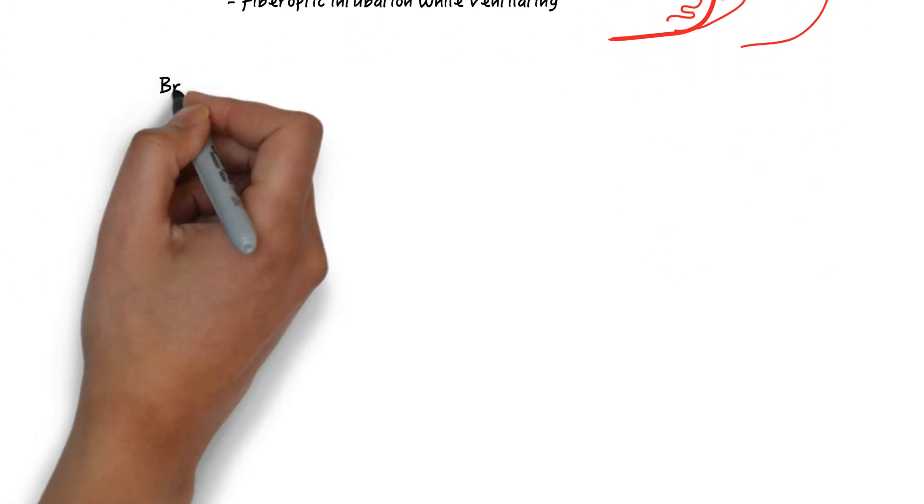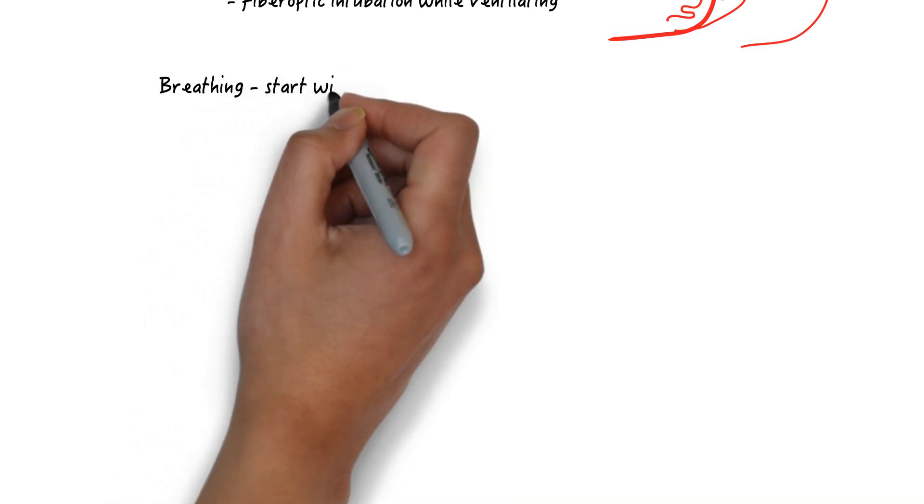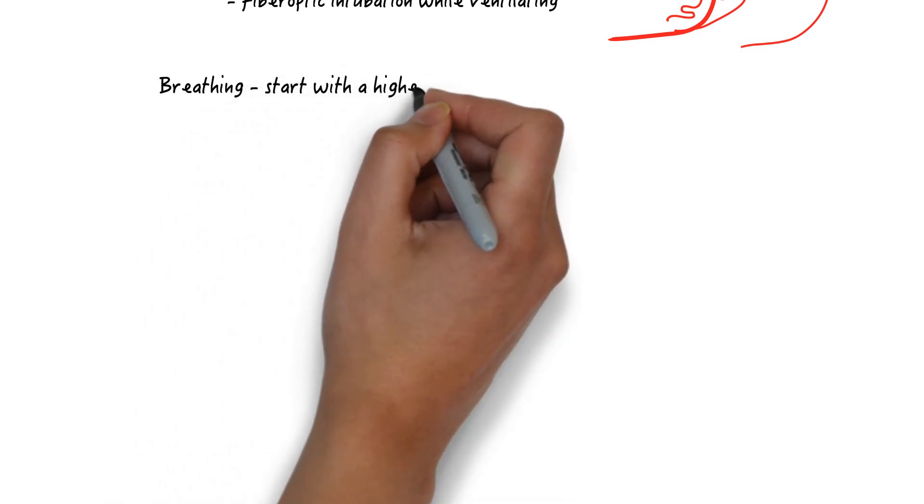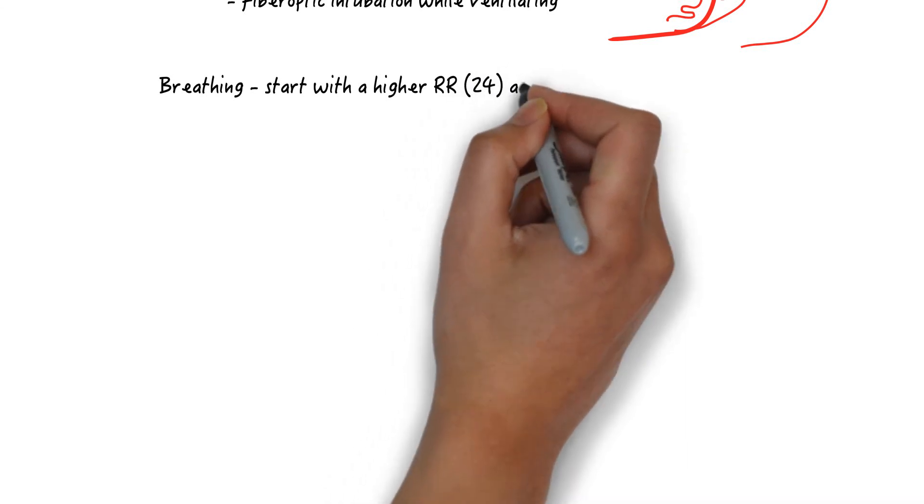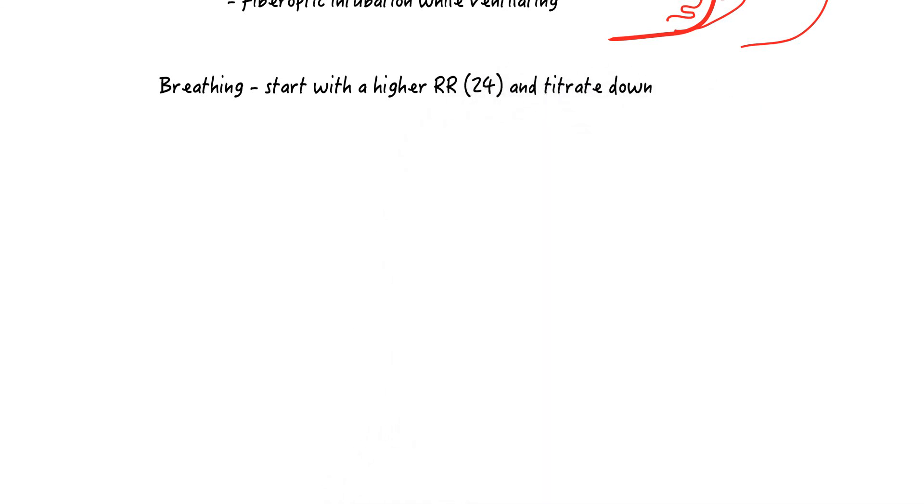The most important part of breathing is to not set this patient on the typical respiratory rate of 12 on the ventilator. Start high with a respiratory rate of 24 or above and titrate down as necessary.